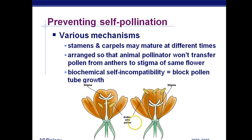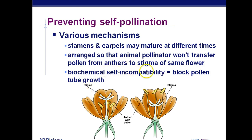Preventing self-pollination: genetic diversity is a good thing in living things, including plants. If you self-fertilize, you don't have as much genetic diversity — not as many chances to produce a trait that promotes survival or reproductive advantage. One way we prevent self-pollination is the stamen and carpel developing at different times — if your eggs are mature but your sperm are not, you can't self-fertilize. Another way is the animal pollinator doesn't touch the anthers, just the carpel, preventing pollen transfer. There's also biochemical self-incompatibility — chemical barriers preventing the pollen of one plant from fertilizing the same plant.